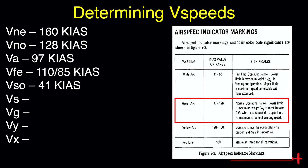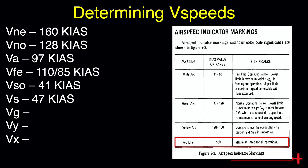The green arc depicts normal operating range without the flaps extended. The lower value depicts VS, or clean configuration stall speed, of 47 knots. The upper value is our max structural cruising speed. Above that, we risk structural damage unless operating in smooth air. As a rule of thumb, normal operation in the yellow arc should be avoided, especially in the presence of any turbulence. The red line depicts our never exceed speed — we should never exceed this value.